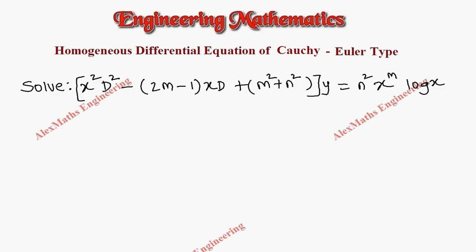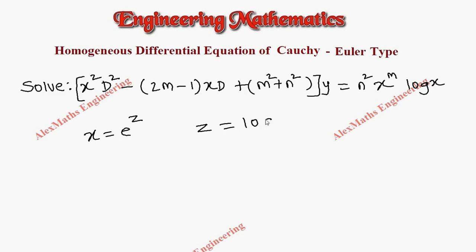Hi students, this is Alex here. In this video we are going to solve a problem where the given equation is a homogeneous differential equation of Euler type where we can find the variable coefficient. So here we are going to use a substitution x is equal to e power z, or z is equal to log x.